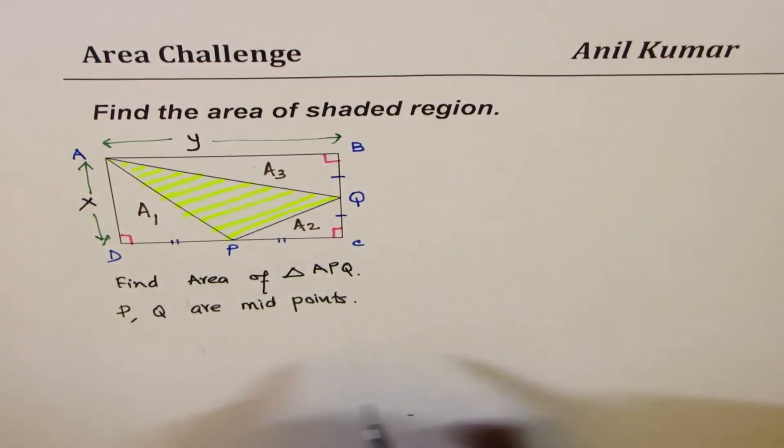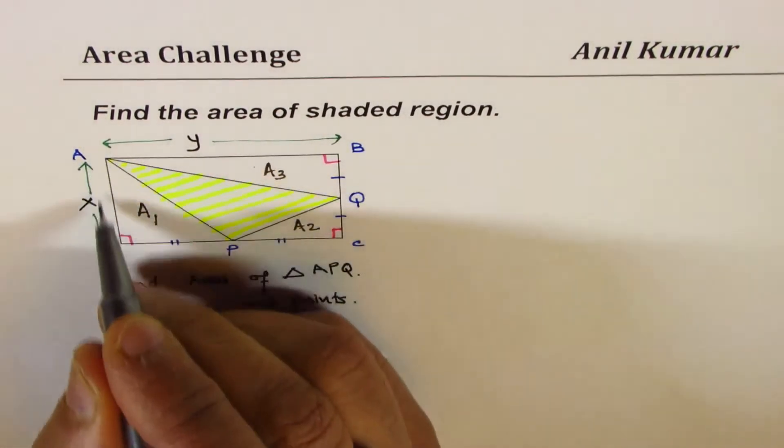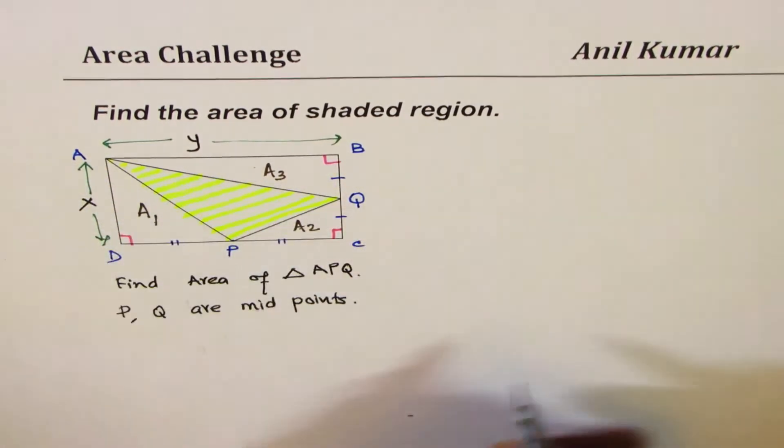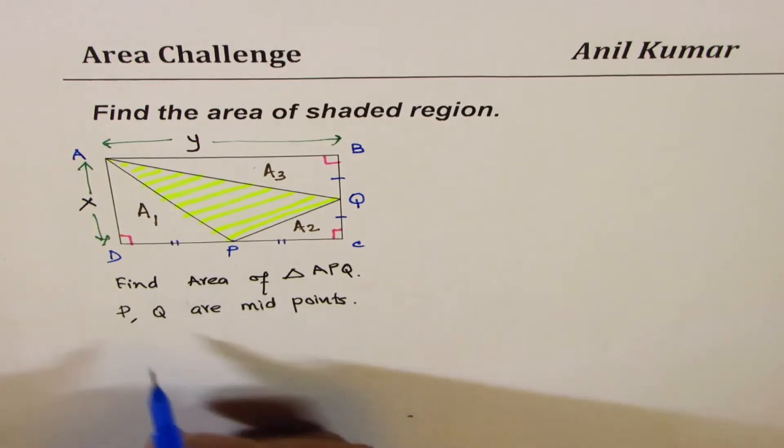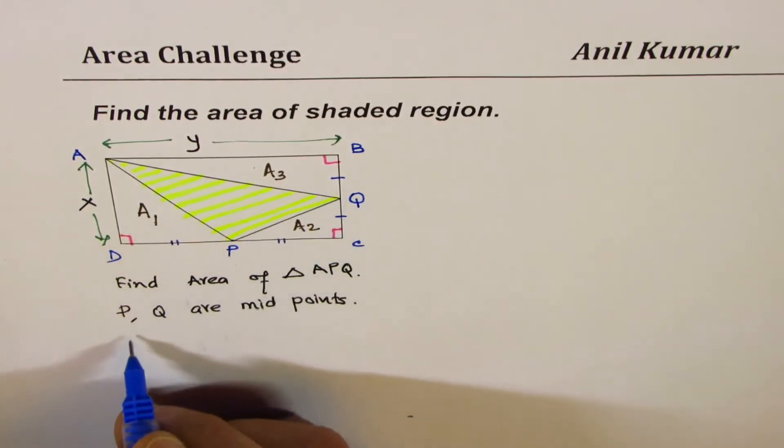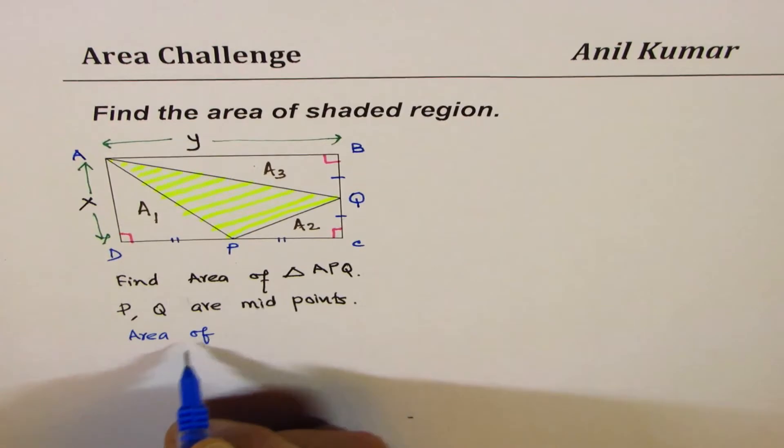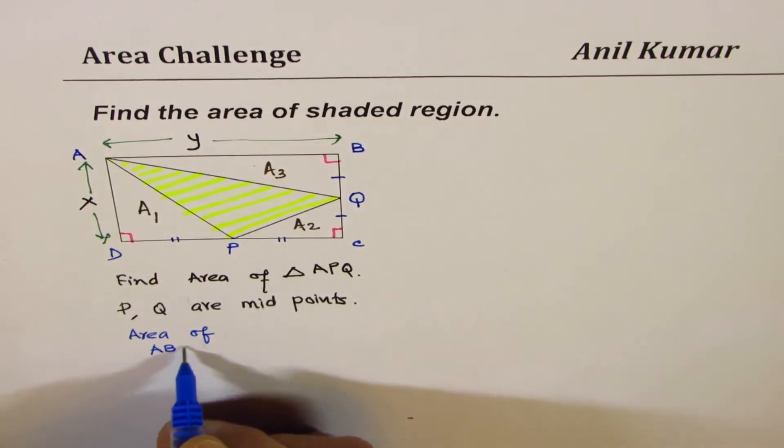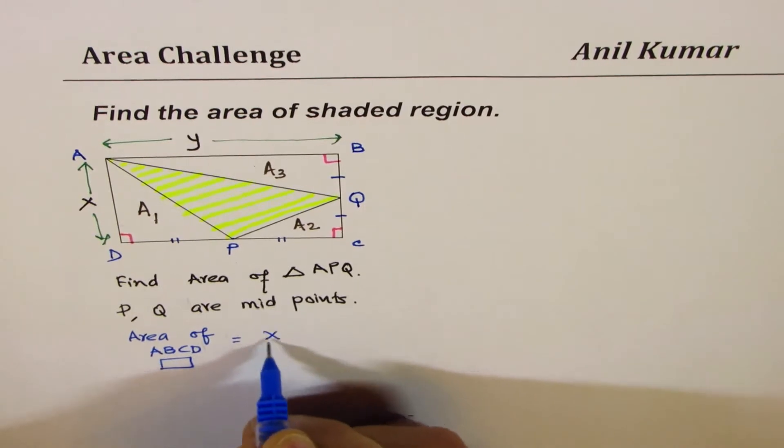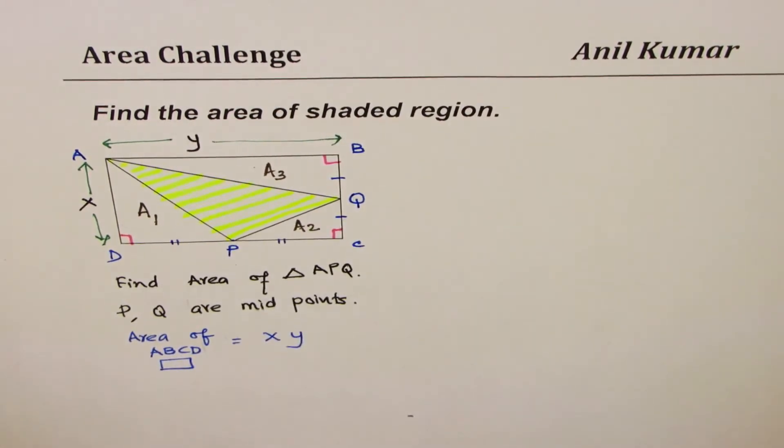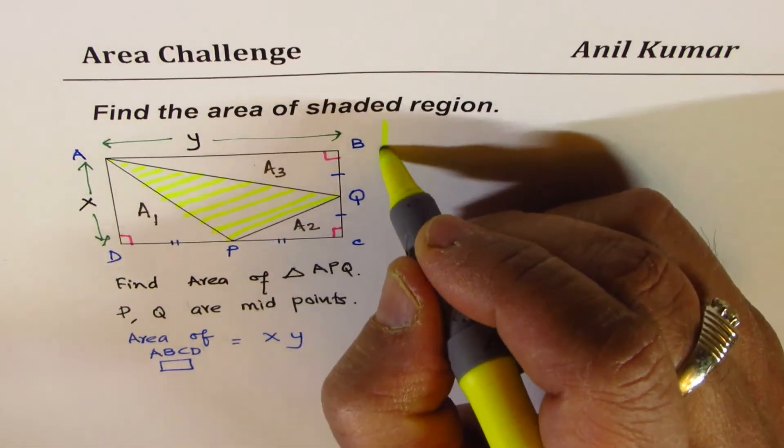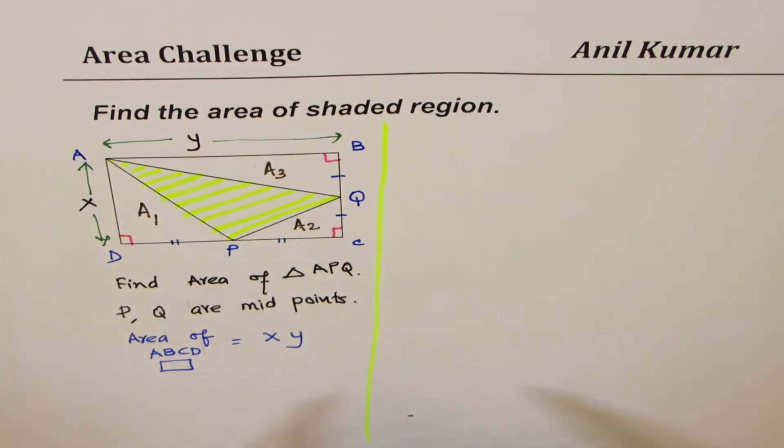Now what is the area of rectangle? It's base into height. So let's write down area of ABCD which is a rectangle, is clearly X times Y, no doubt about it. So that is the total area from where we are going to subtract area of these three triangles.